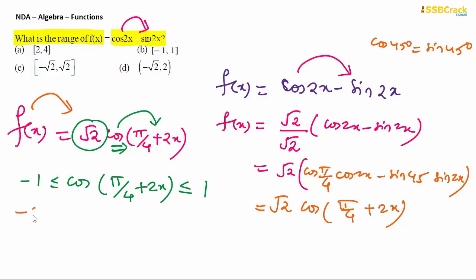Cos with the angle pi by 4 plus 2x will have the same range - the angle doesn't vary anything. So the range is minus 1 to 1. But we need it multiplied by root 2. If we need to know the range of this f(x) function, we have to multiply by root 2. This will take the minimum value minus root 2 and maximum value plus root 2. Hence the range will be option C.